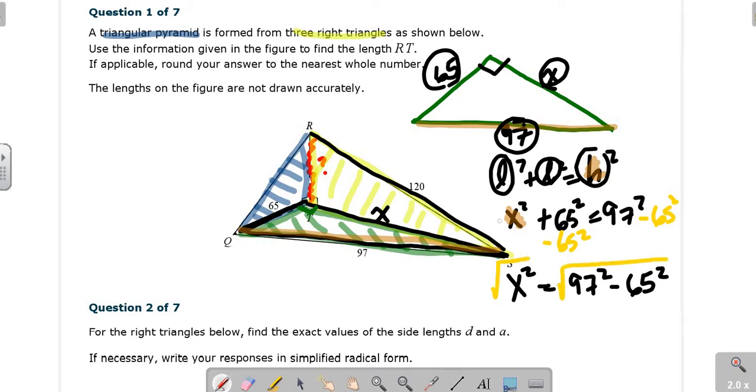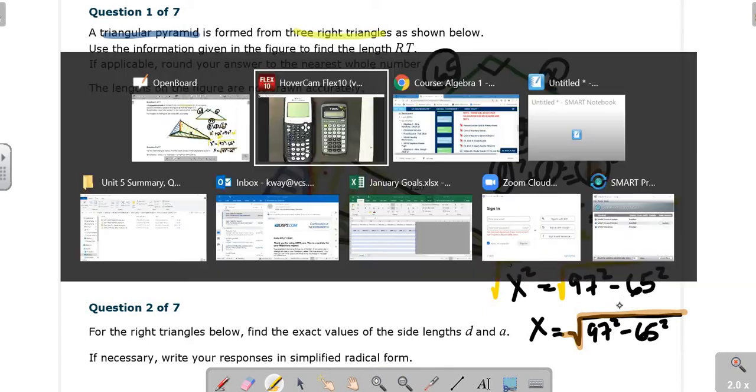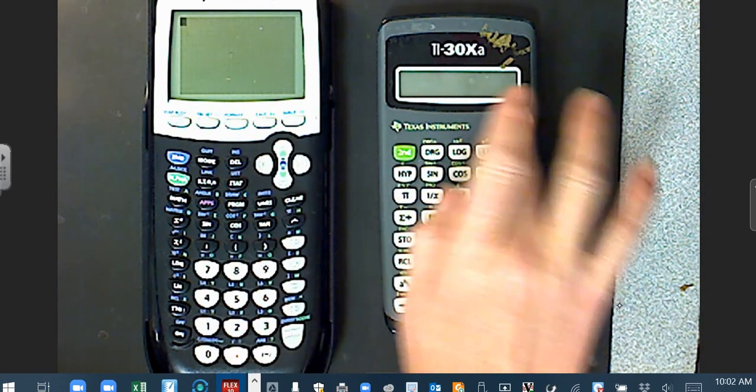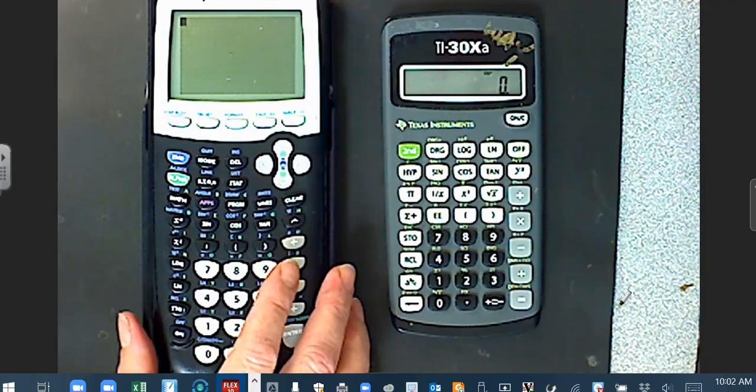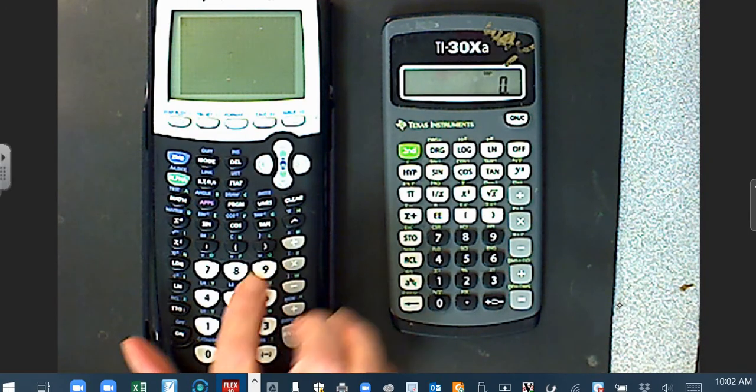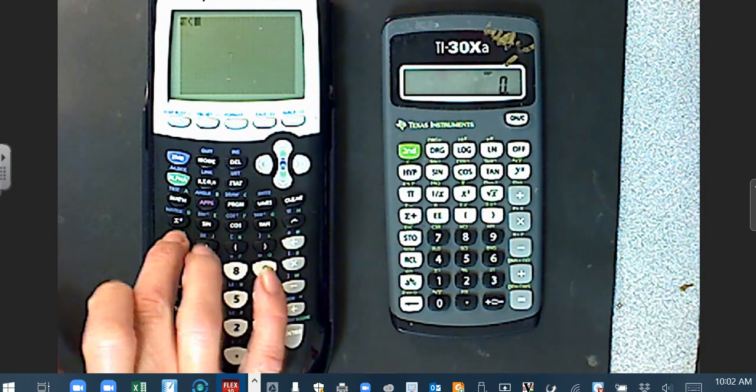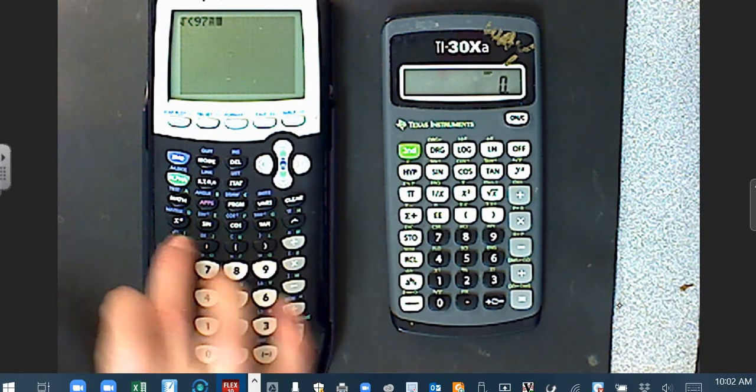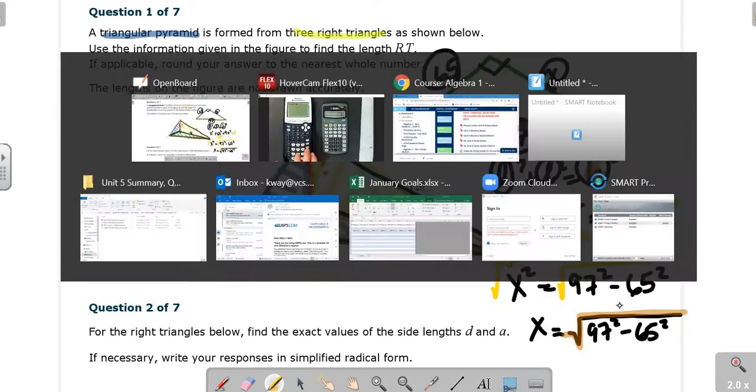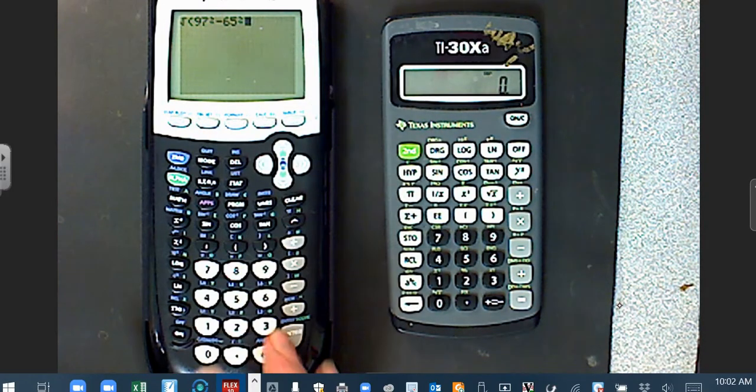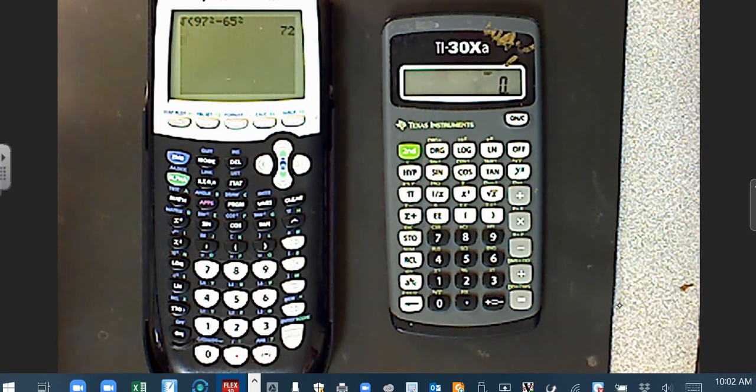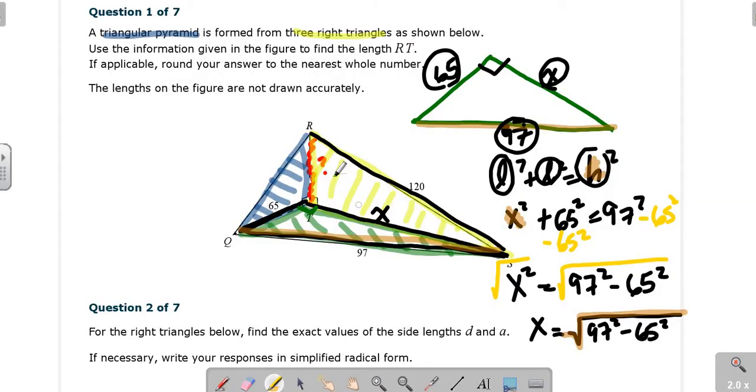So I have X squared equals 97 squared minus 65 squared, and then I have to square root. To solve for that X in the calculator, I can put this entire expression, 97 squared minus 65 squared, underneath the square root sign, all on my TI-84. Your square root is right there above the square sign. So second function square root, 97 squared button, minus 65 squared button, enter. Ta-da! You're done. So our answer here for X is 72.